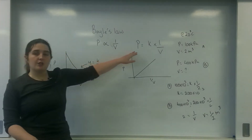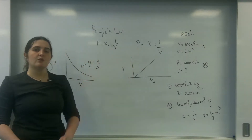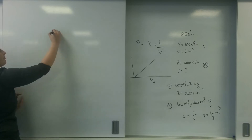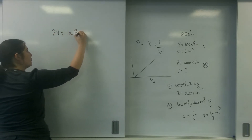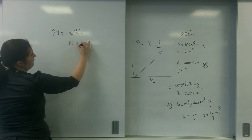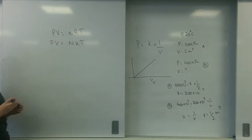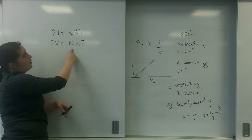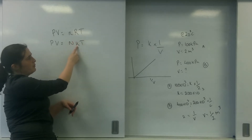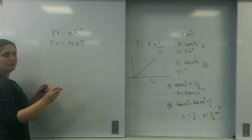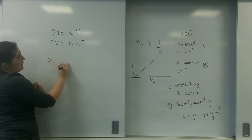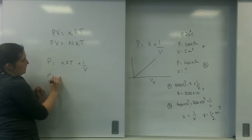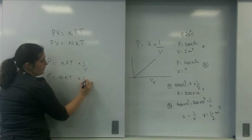This is quite a powerful relationship to use. Now, this relationship is not on your data sheet — but the Universal Gas Law is. If I rearrange that, I end up with P equals nRT times 1 over V, or P equals nKT times 1 over V.